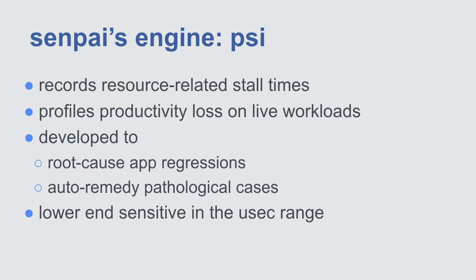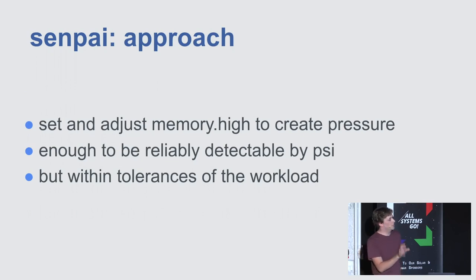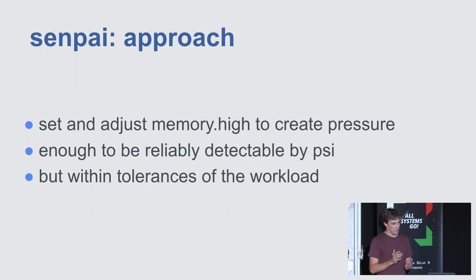PSI is good at the high end of pressure, but at the very low end it's actually fairly sensitive — it can record events that take like microseconds. This is where Senpai makes use of it. Once PSI is in place, we continuously modify the cgroup memory allowance and monitor PSI pressure in a feedback loop. This is how we can tell when we're approaching that knee: when pressure kicks up, we back off instantly. The idea is to apply enough pressure for PSI and Senpai to detect, but within the tolerance of the workload before latencies go up or throughput drops.